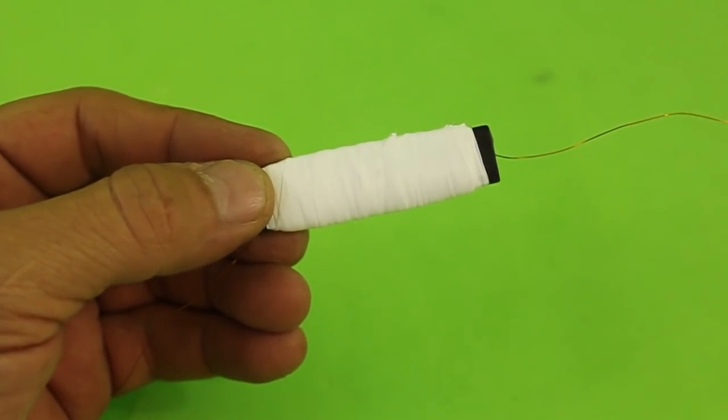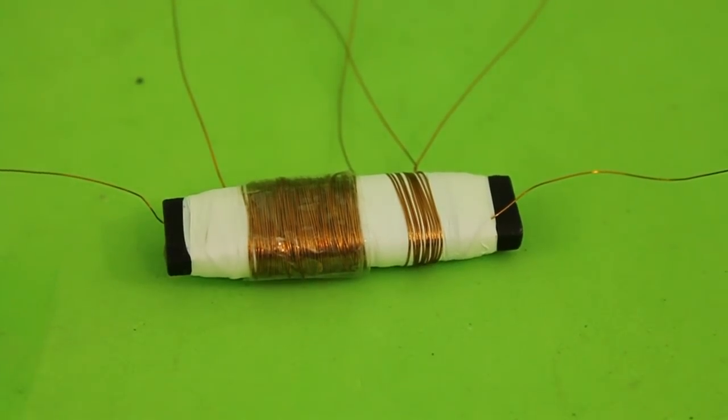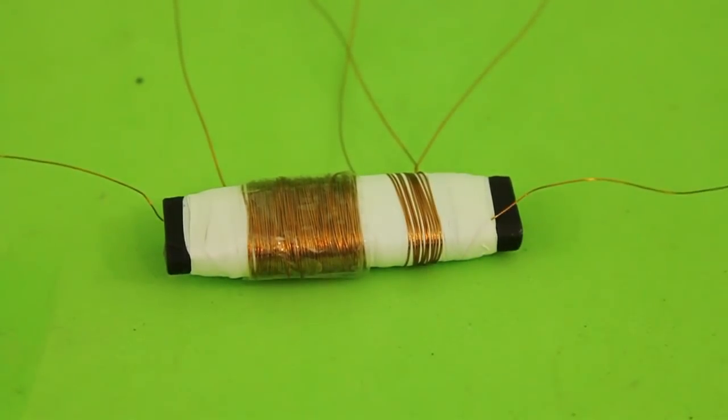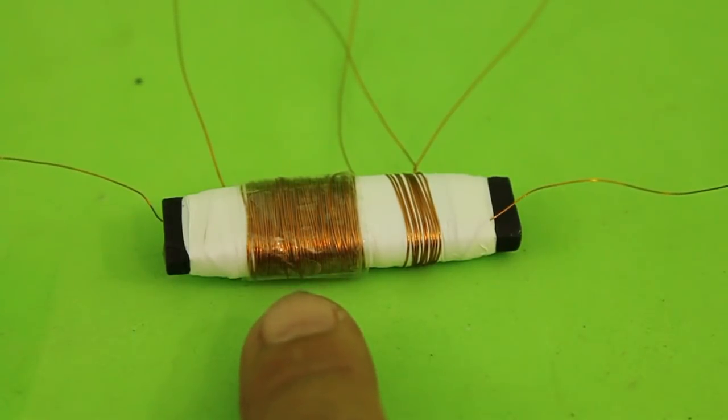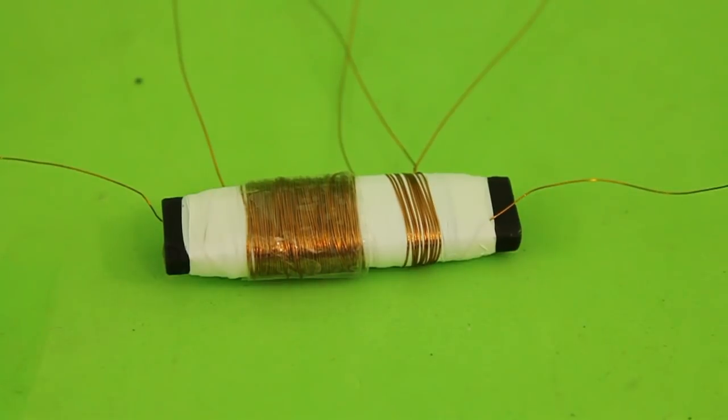These two coils will be with wire size 30 AWG. The transformer is finished. We have the secondary coil with 500 turns, the primary coil with 48 turns, and the feedback coil with 10 turns.